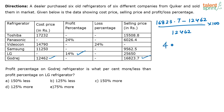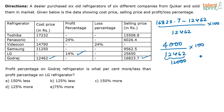You can take it as 4,400 or even 4,000, and divide by 12,462. Again, you can approximate 12,462 as 12,000. Taking approximate values: 4,000 by 12,000 is 100 by 3, or approximately 33%. It will be a little higher than 33% because the actual numerator is closer to 4,400, but approximately the profit percentage of Godrej is 33%.